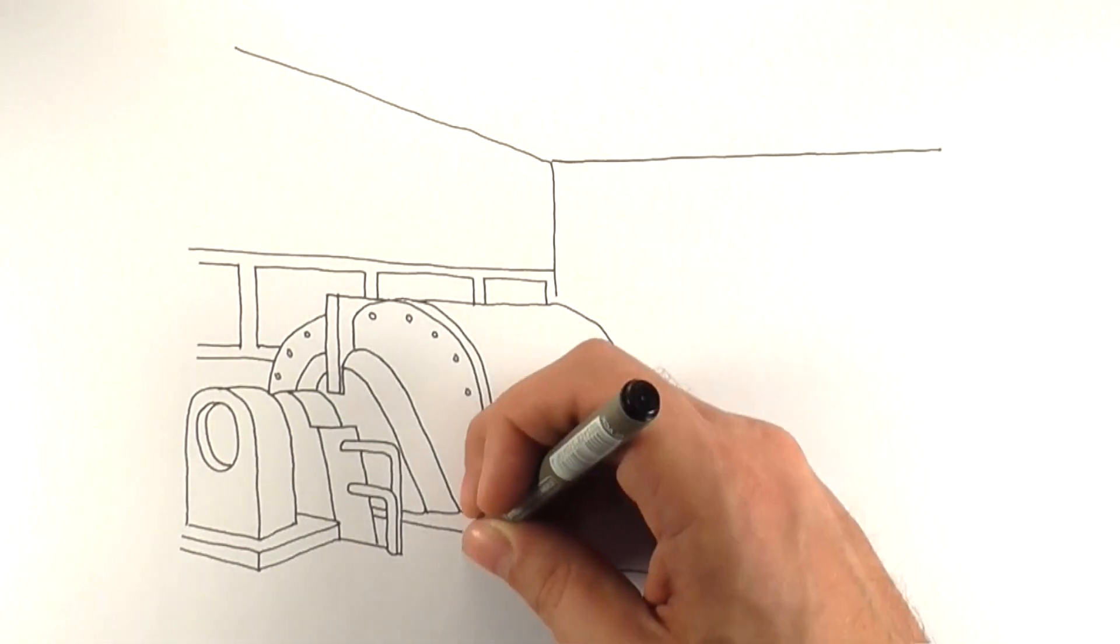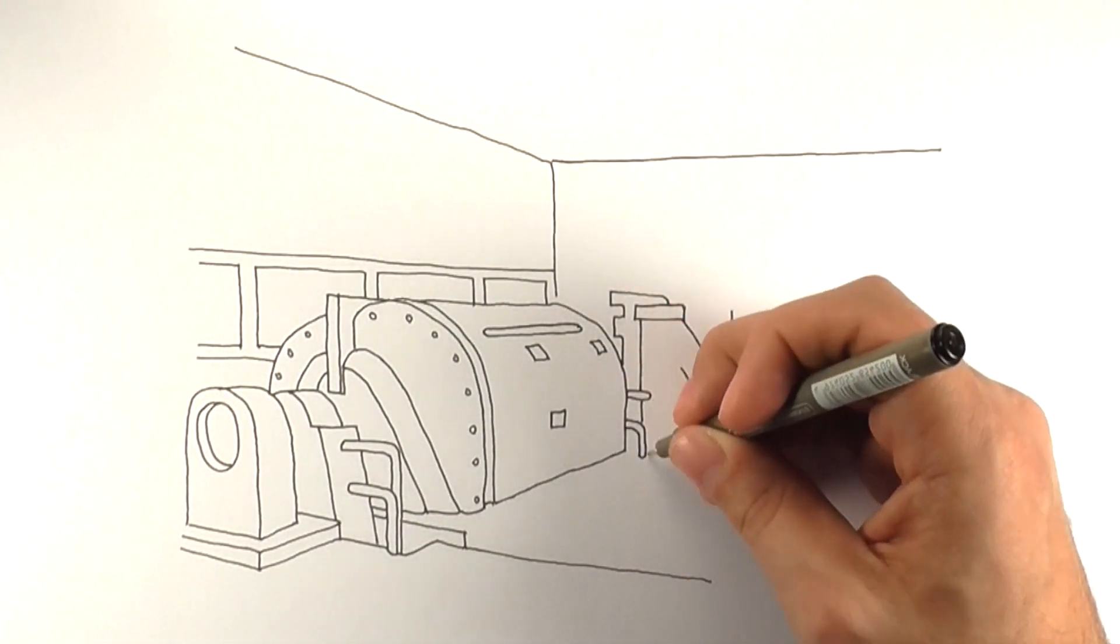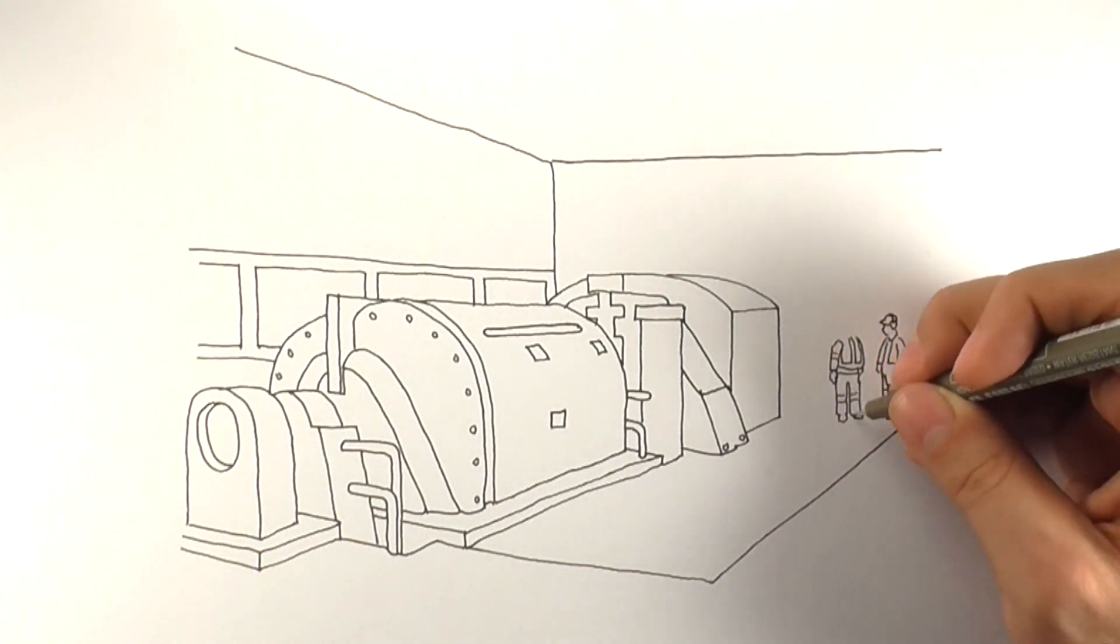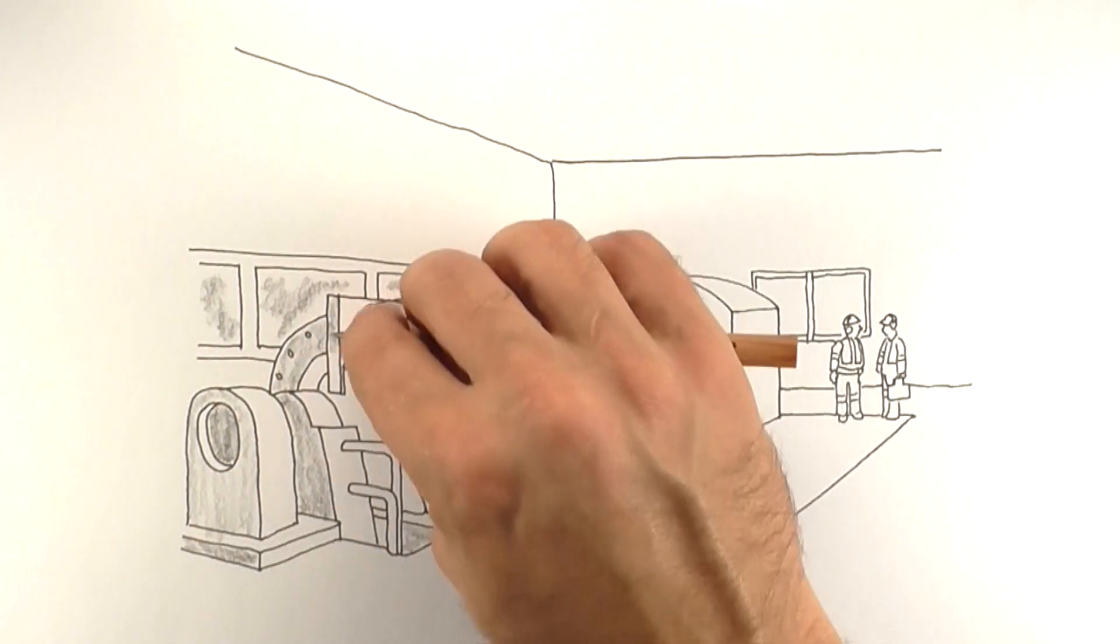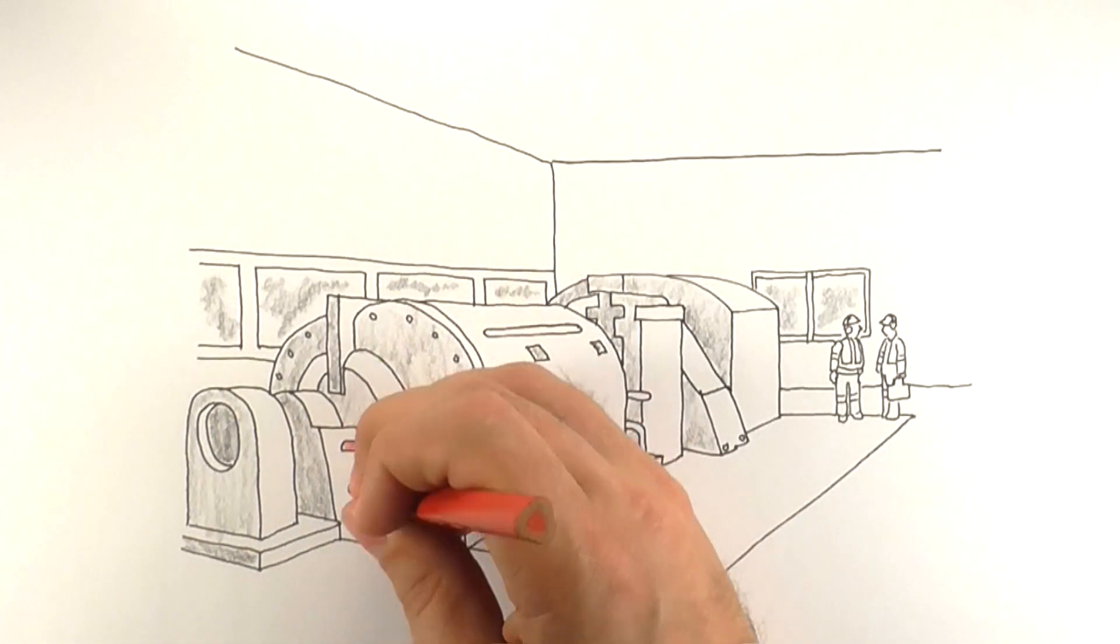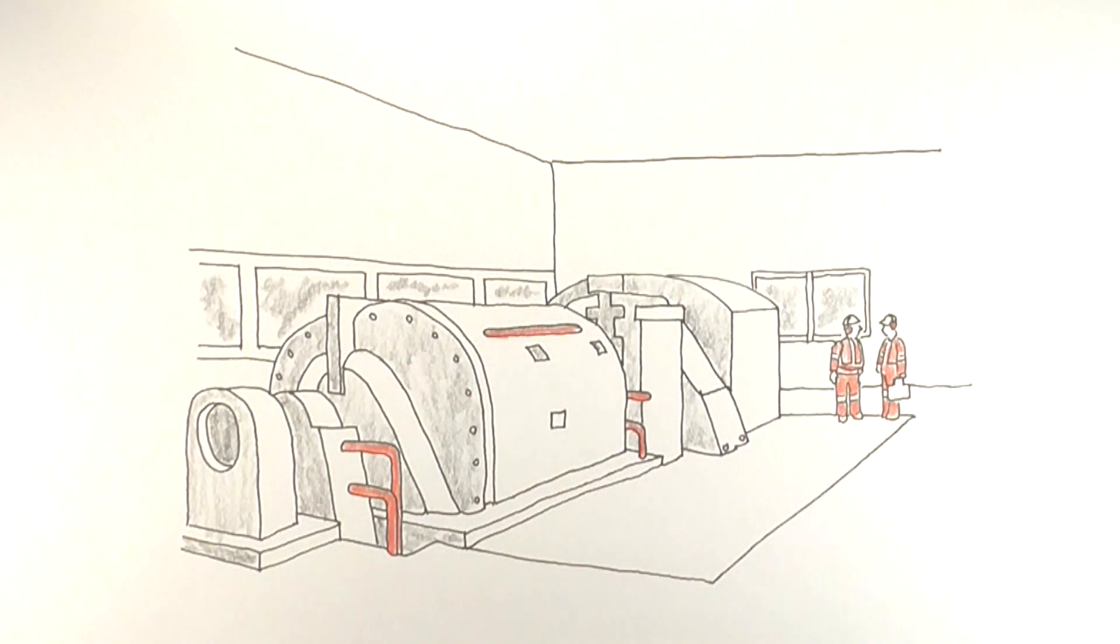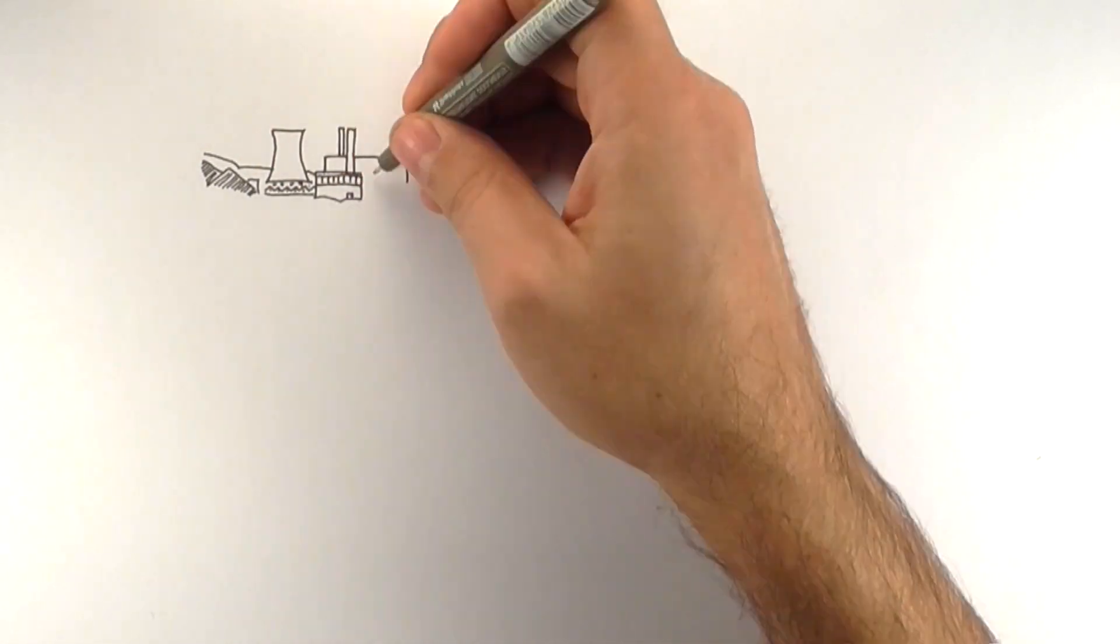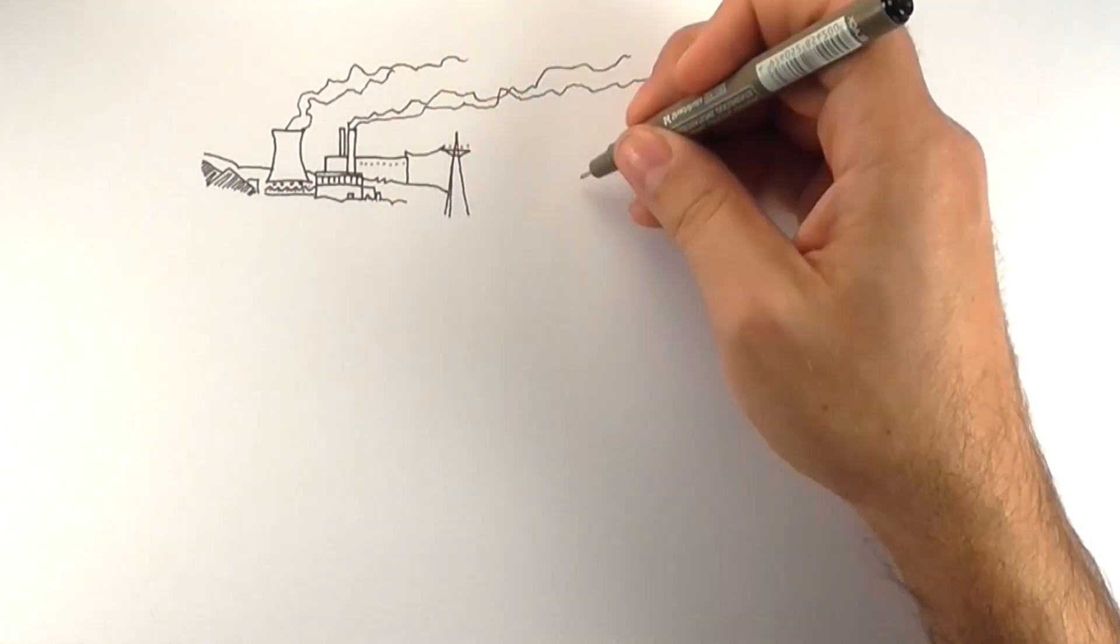The traditional electricity system was built around large synchronous generators like coal, gas, and hydro. Synchronous generators produce electricity with large turbines and generators that rotate with the alternating current frequency.